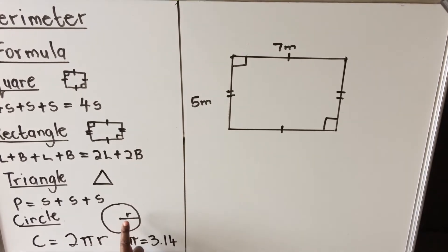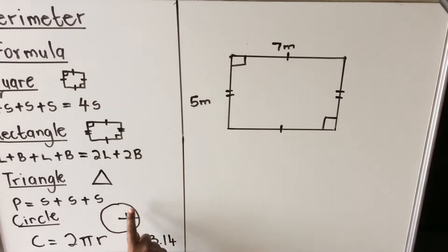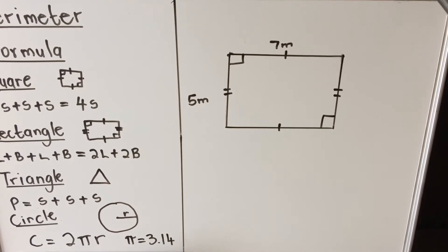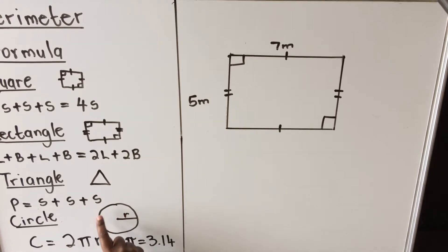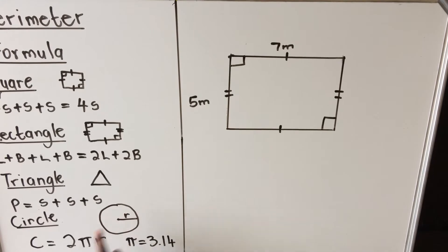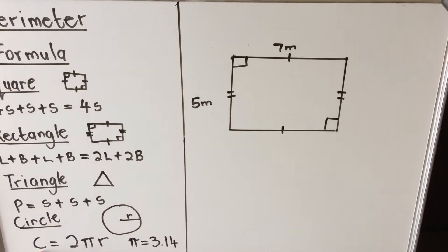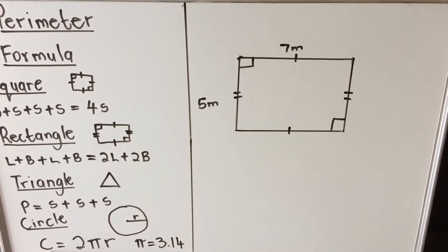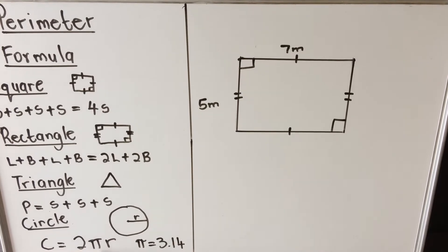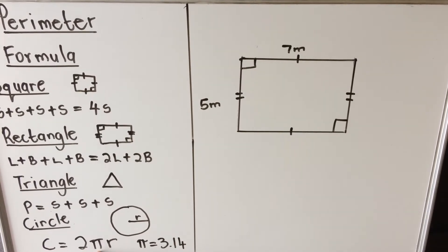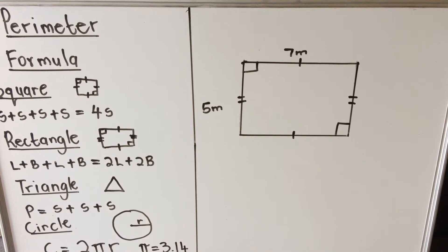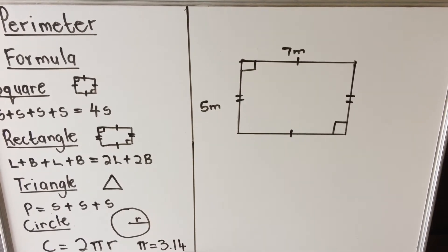For a circle, the perimeter has a special name called the circumference. The outside part of a circle is the circumference, which is why we use C instead of P. The formula is: circumference equals 2πr, where pi is the constant 3.14.